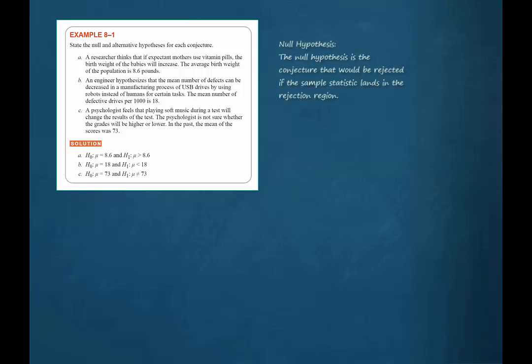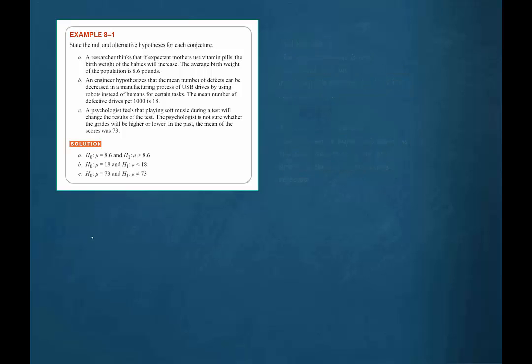The null hypothesis is the conjecture that would be rejected if the sample statistic lands in the rejection region. The alternative hypothesis contains the conclusion that would be drawn if the null hypothesis is rejected.